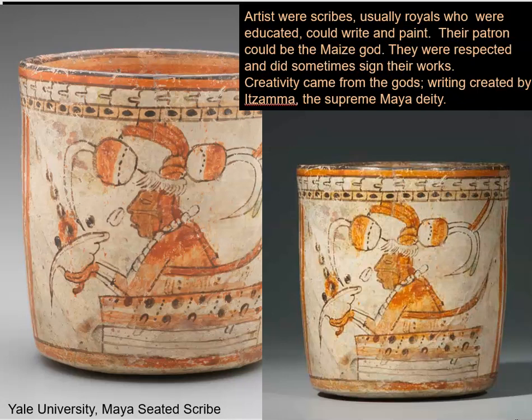This is another example, an image you can find at Yale University — a Maya seated scribe. This time he is holding a conch shell, which was used to hold paint. Our artist is in the act of getting ready to paint or write, and the little circles coming down to the conch shell represent water flowing in, since the pigment needed to be mixed with water. From the costuming, jewelry, and headdress, you can see that artists were highly respected.